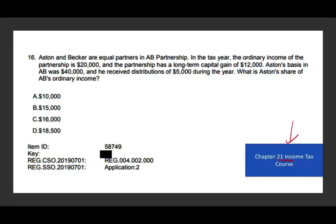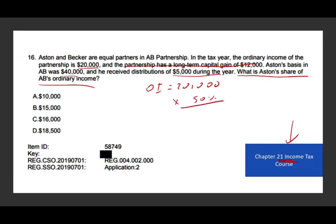In the blue box here, I reference which chapter this topic is covered in, in case you need to review the material. The question asks: what is Austin's share of ordinary income? Austin and Baker are equal partners in A-B partnership. The ordinary income for the partnership is $20,000. The partnership has a long-term capital gain of $1,200 — we don't care about that since they're asking for ordinary income. The basis is $40,000, and they receive a distribution of $5,000. Austin's ordinary income is $20,000 times 50%, which equals $10,000.